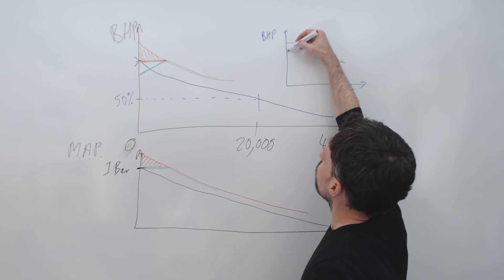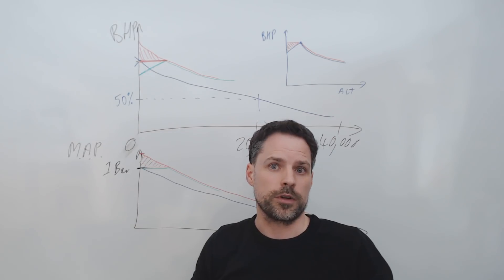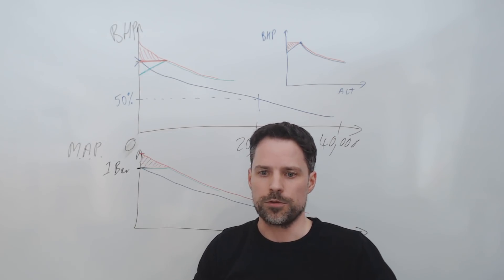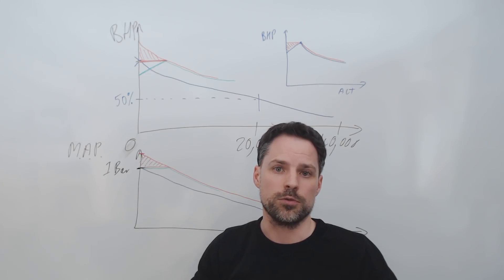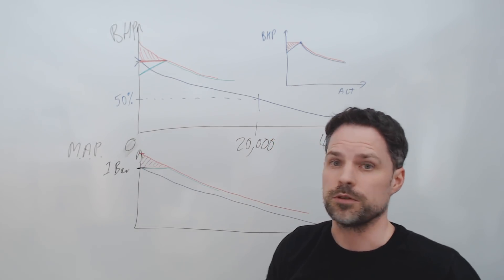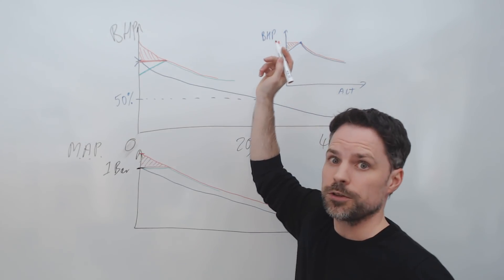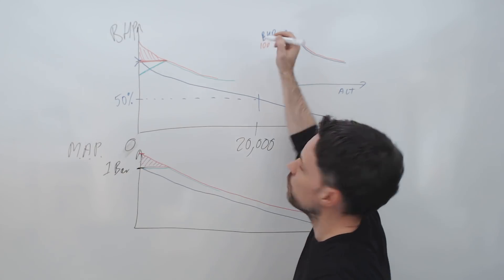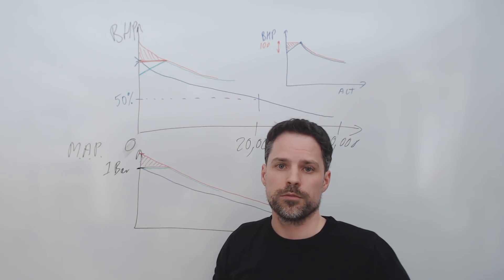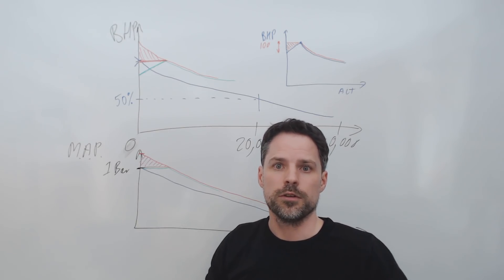So basically what that means is that this part here is basically free horsepower. So this would give the Messerschmitt a slight speed advantage at low level. Just to give you an idea, with those particular engines and those planes, this would be something in the order of 100 horsepower. So that's about 10% at the time.